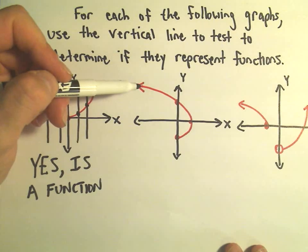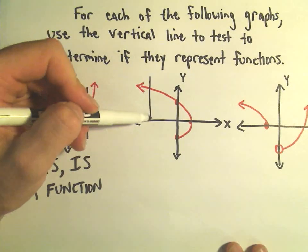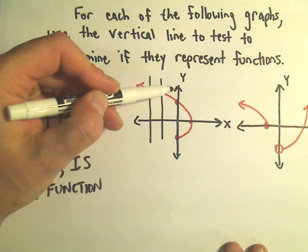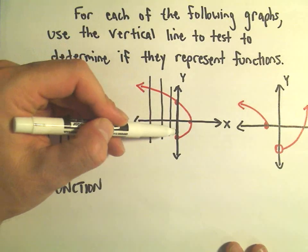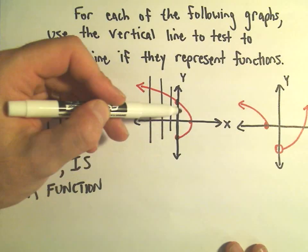Let's look at this graph in the middle. Notice on the left side, if we were to draw vertical lines, it would only hit it in one place. But notice, for example, the y-axis hits the graph in two places.